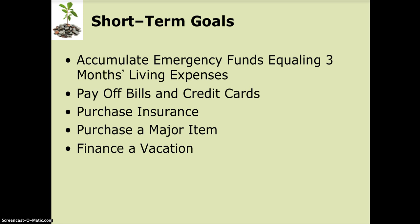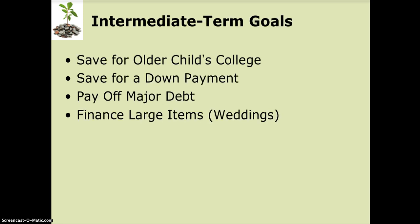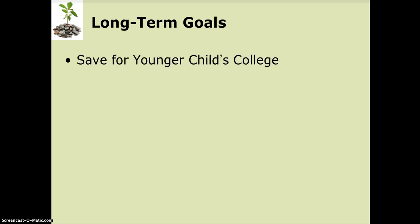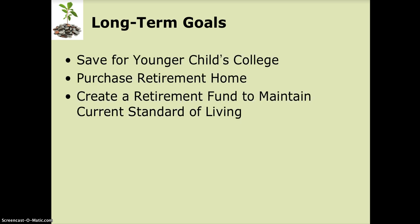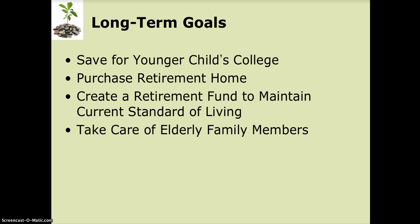Intermediate goals might be saving for a down payment on a house or paying off major debts. Long-term goals could be saving for retirement, purchasing a second home for retirement, or saving for a grandchild's education. Other people have long-term goals of taking care of older family members or starting a business later in life. In fact, data related to entrepreneurship indicates that the highest rate of new business ventures are being created by people 55 years of age or older who are pursuing encore careers.